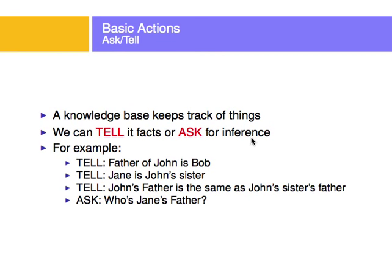For example, you can tell the agent that the father of John is Bob. You can tell the agent that Jane is John's sister. And you can tell the agent that John's father is the same as John's sister's father. Then you can ask, who is Jane's father? The idea is that this logical agent will infer, based on these facts that it has been told, who Jane's father is.